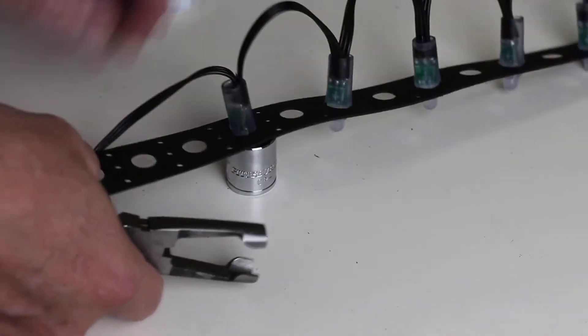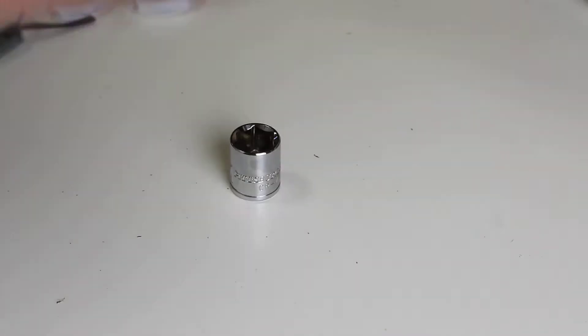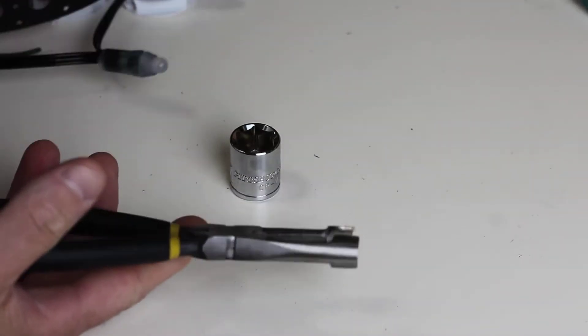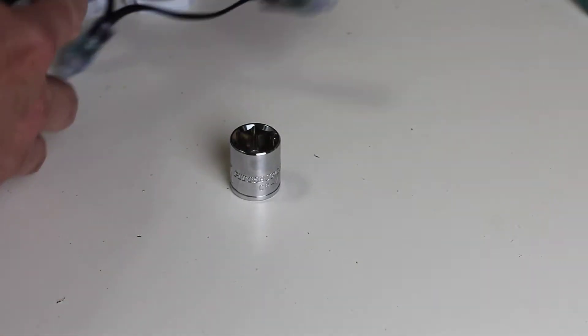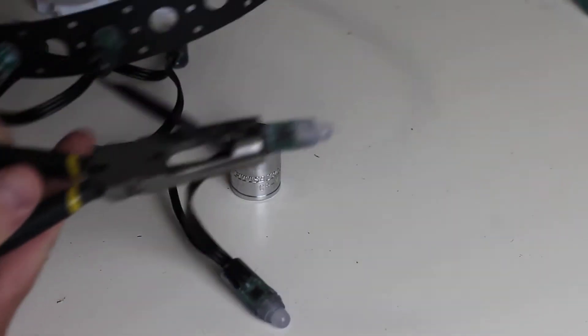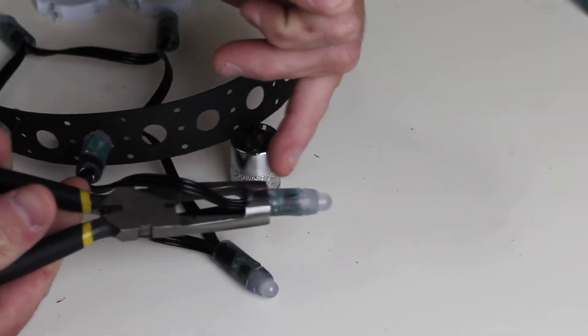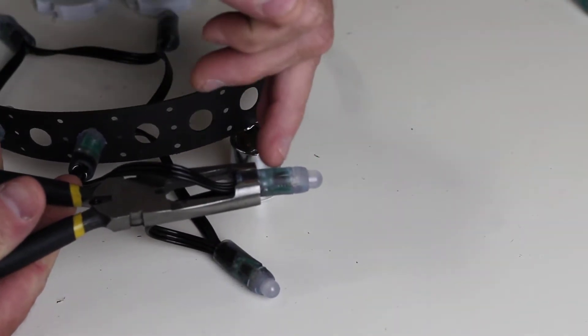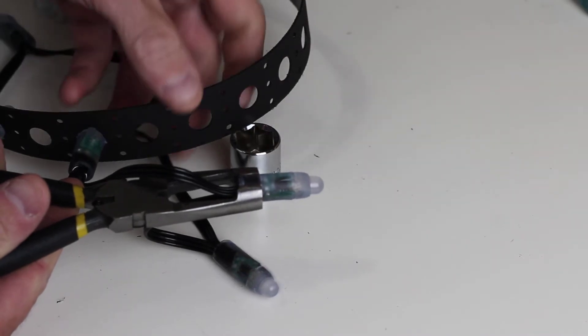Now what we're going to do is simply grab the pixels with the pixel pliers and just grab it around the neck. We want to get it so that it's above where we're installing it. Now this will vary depending upon what surface we're putting it in.